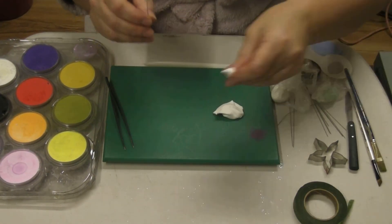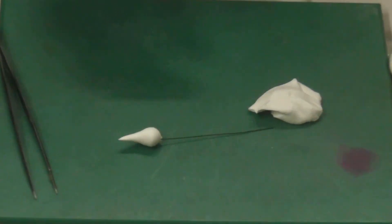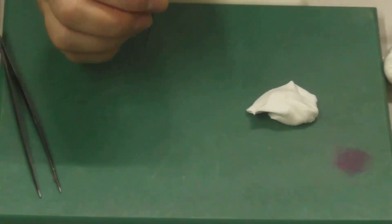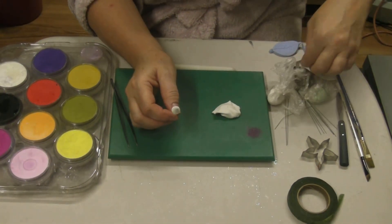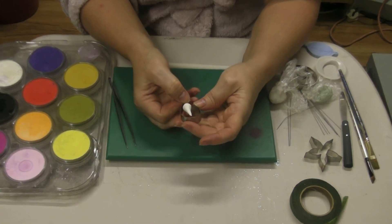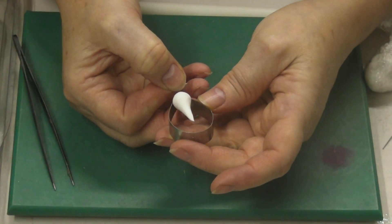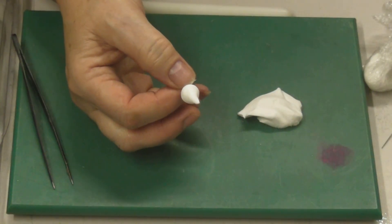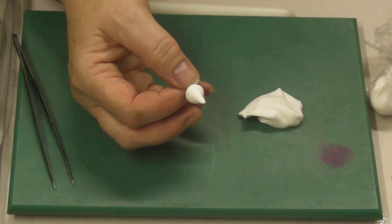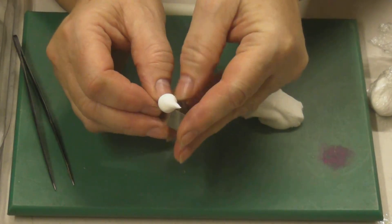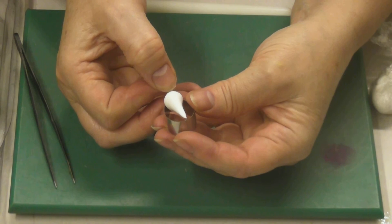I have got some that I've done earlier, so this is what we're going to work on. We're going to use these cutters. Basically, you're going to put the bud inside. That's a little too big for that one, so we're going to go with a smaller size.